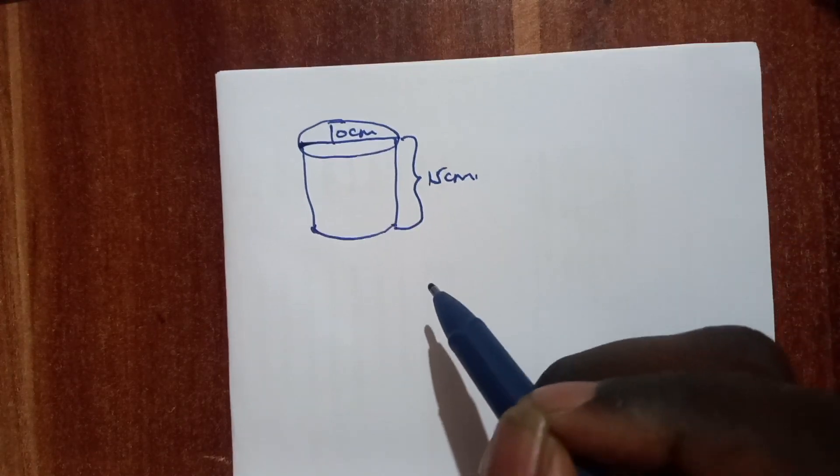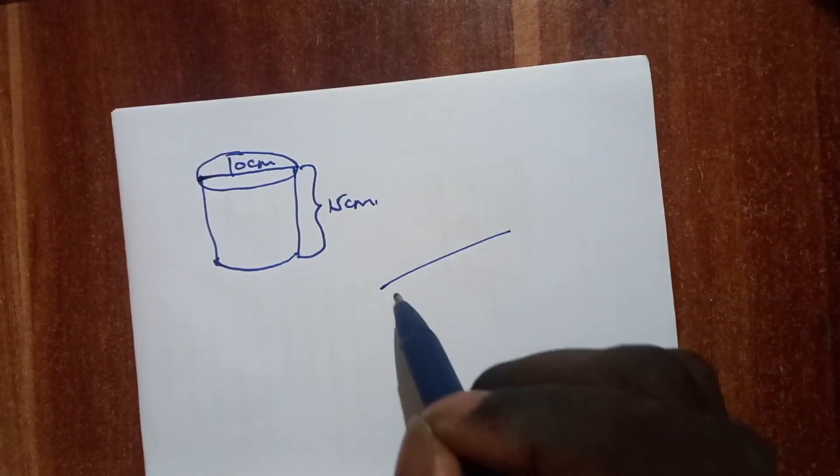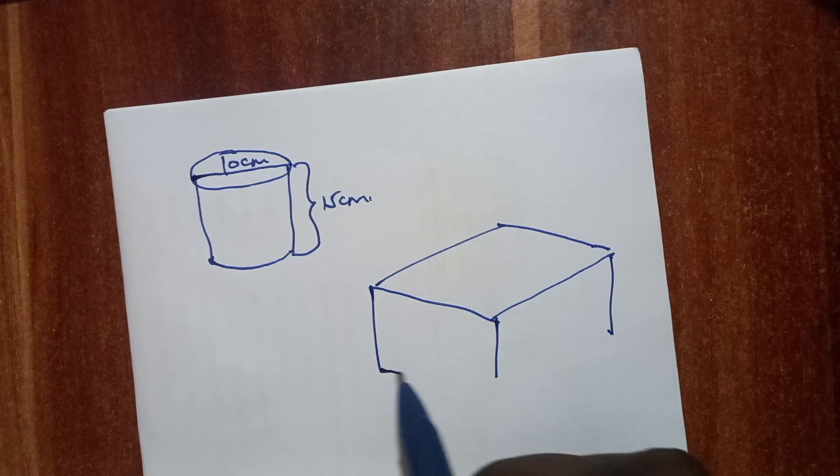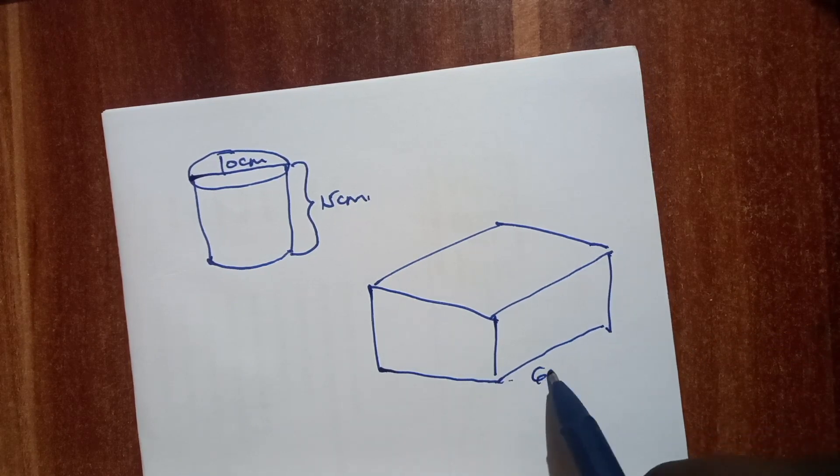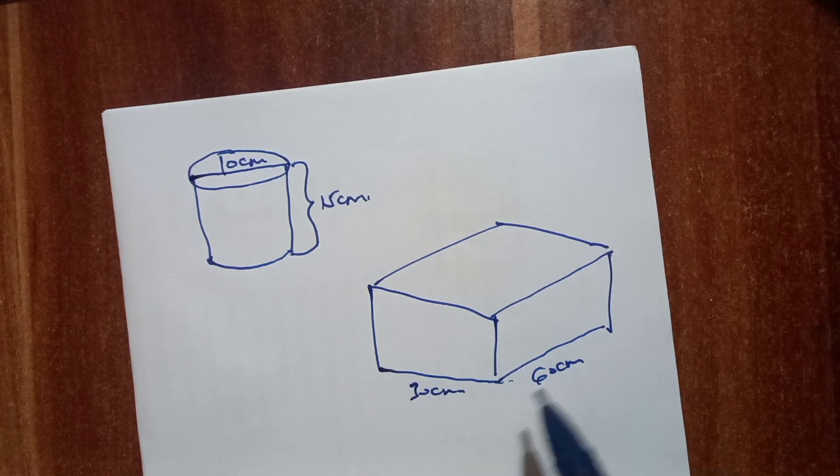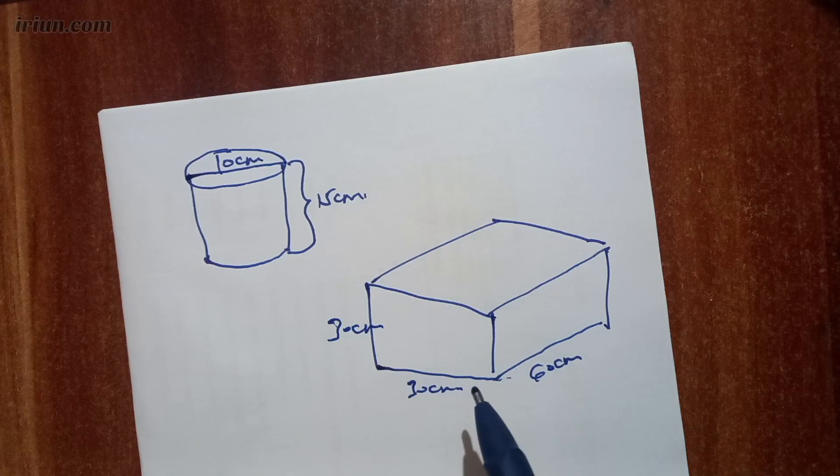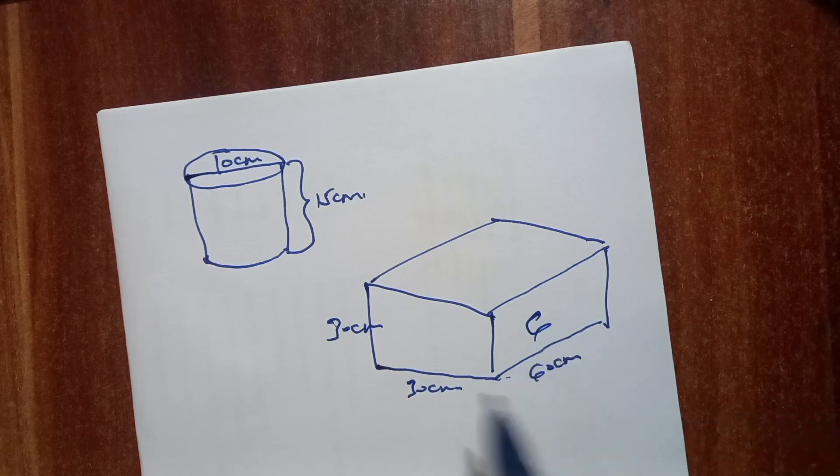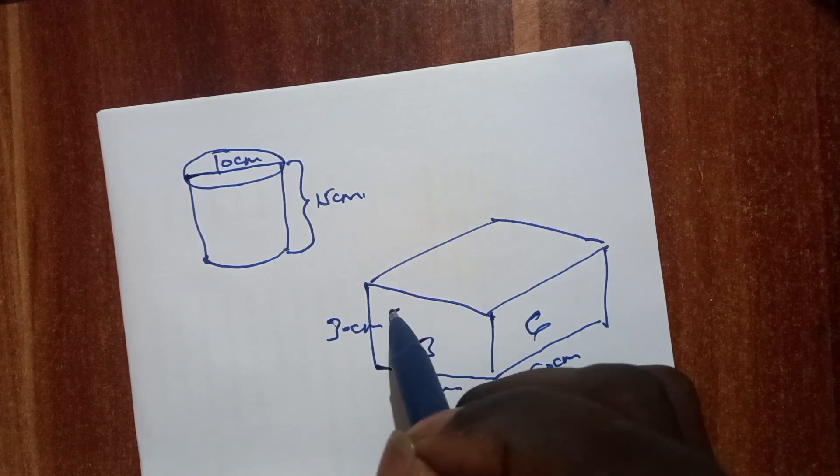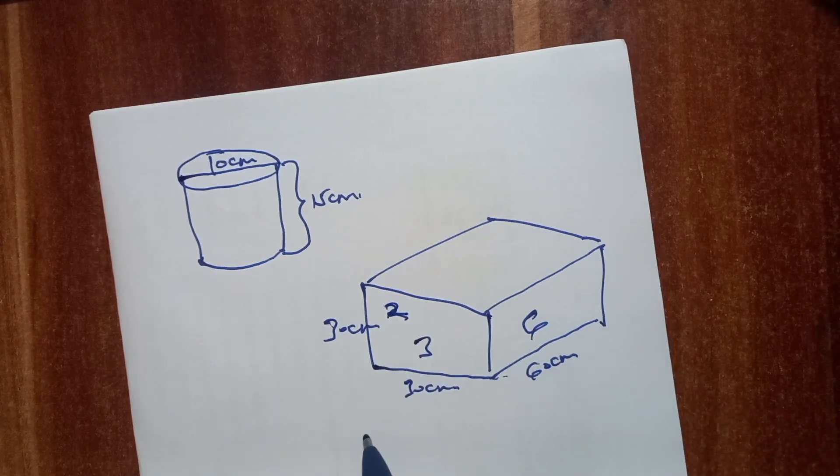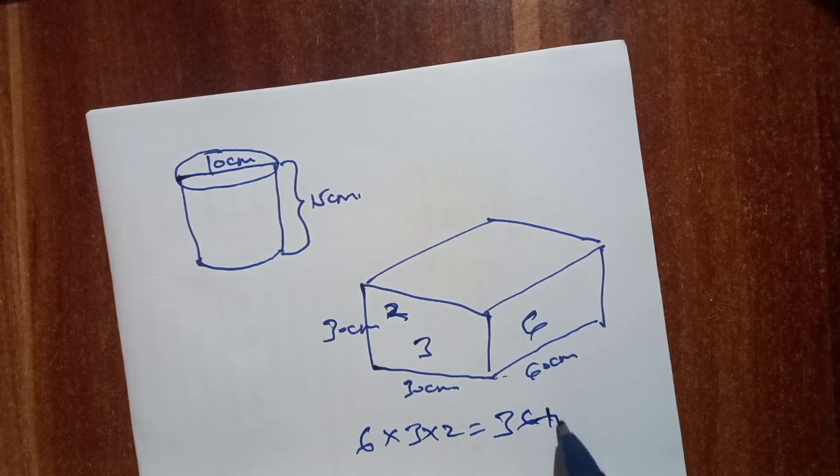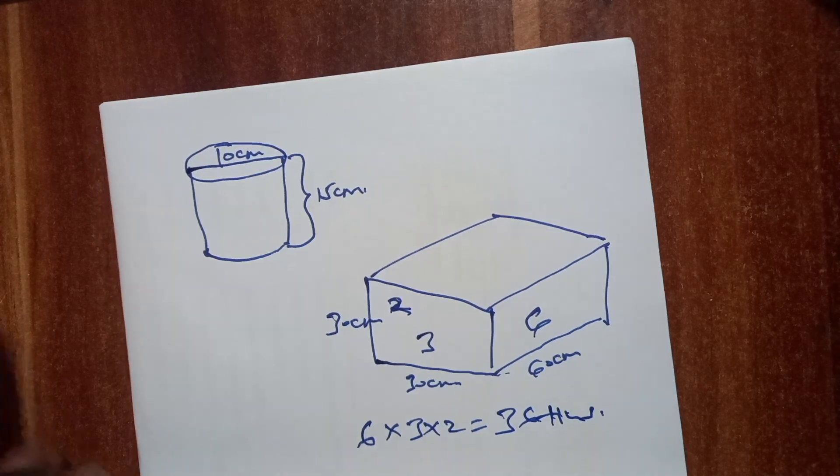Then we are told that these tins are packed into boxes. So we have our box here. This box is 60 centimeters long, 30 centimeters wide, and 30 centimeters high. When we take this into consideration, it means we can package 6 tins lengthwise, 3 tins in the width direction, and 2 tins in the height direction, meaning we can package 6 times 3 times 2, which is 36 tins inside here. That's the maximum number of tins that can be packaged.